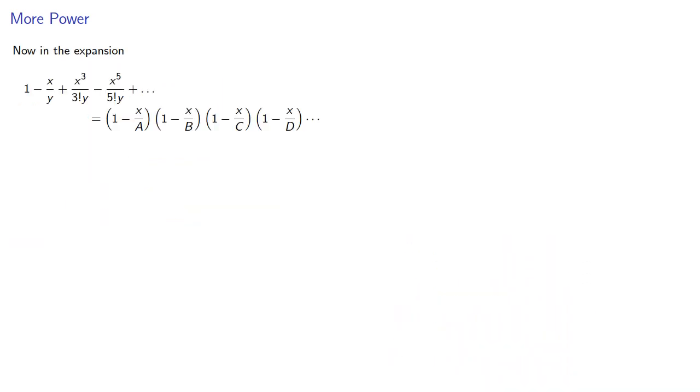So now let's return to our expansion, where a, b, c, d, and so on are the solutions to y equals sin x. We'll let p equal the sum of the reciprocals, q be the sum of the reciprocal squares, and let alpha be this sum.